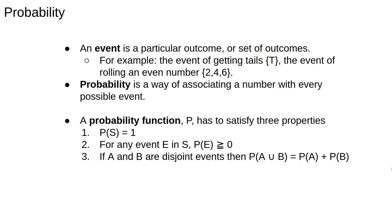If A and B are disjoint events, then P(A ∪ B) = P(A) + P(B).